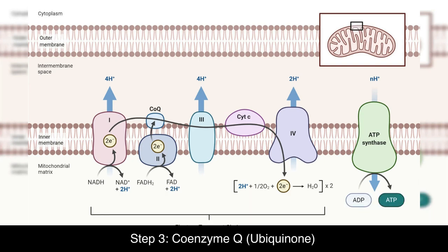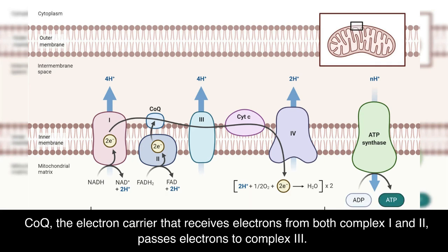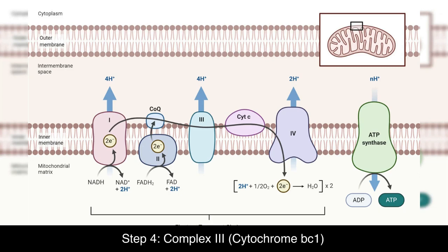Step 3: Coenzyme Q — ubiquinone. CoQ is the electron carrier that receives electrons from both Complex I and Complex II, and passes those electrons to Complex III.